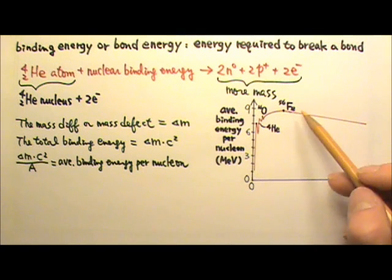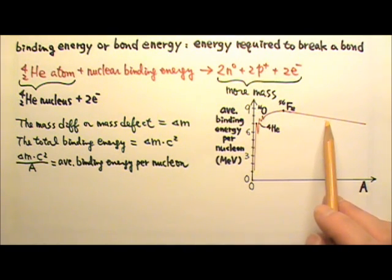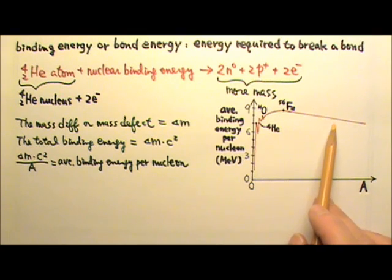In general, beyond iron-56, the bigger the nucleus, the less stable the nucleus.